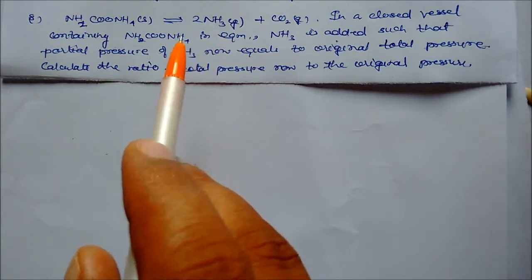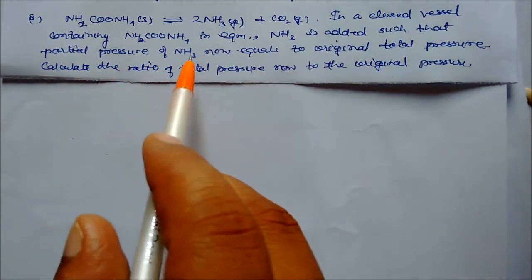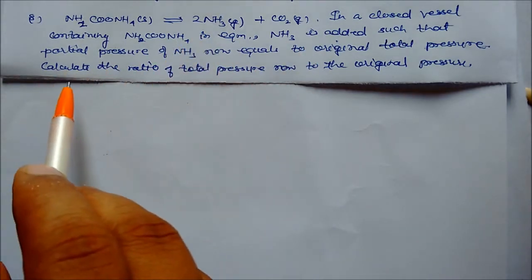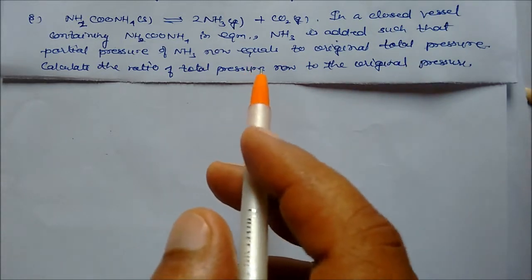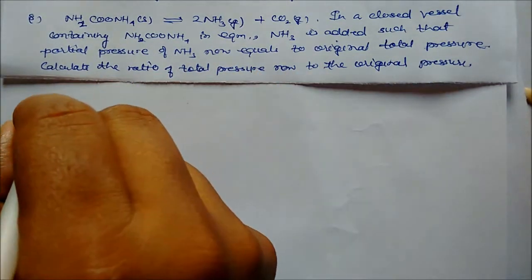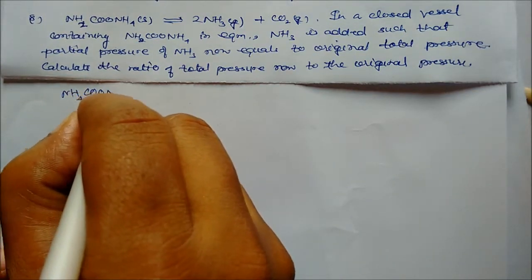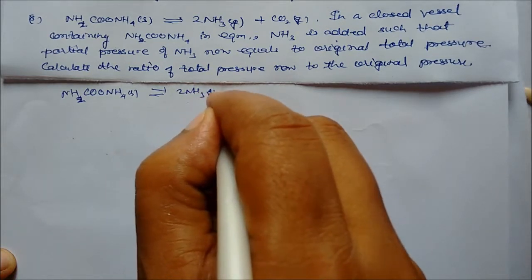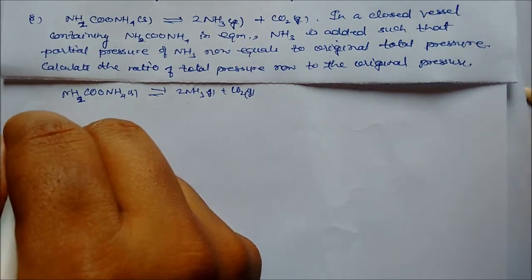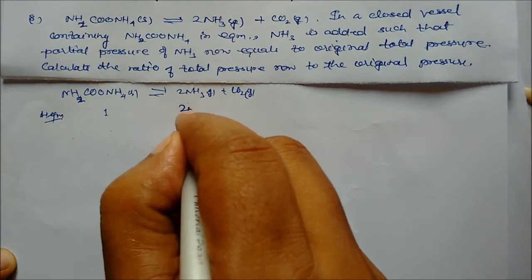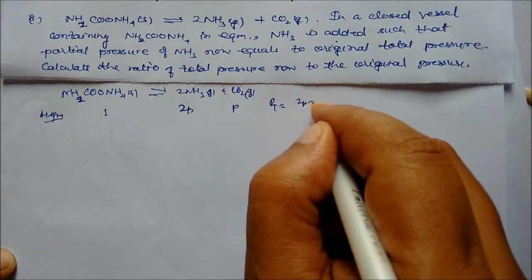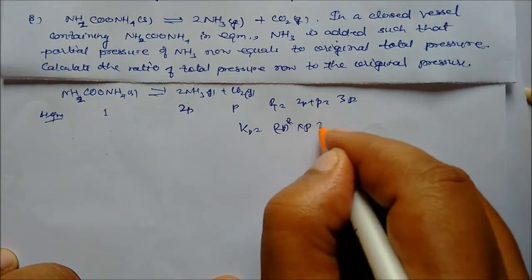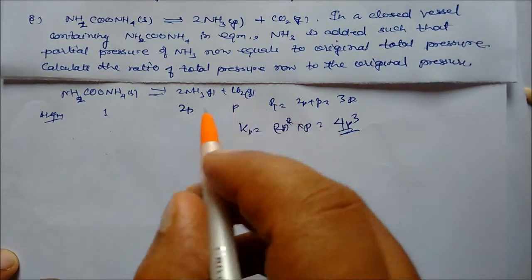Final problem: ammonium carbonate in a closed vessel is at equilibrium: (NH4)2CO3·NH2 (solid) ⇌ 2NH3 (gas) + CO2 (gas). At equilibrium, partial pressure of NH3 is 2P and partial pressure of CO2 is P, giving total pressure = 3P. Therefore Kp = (2P)² × P = 4P³.